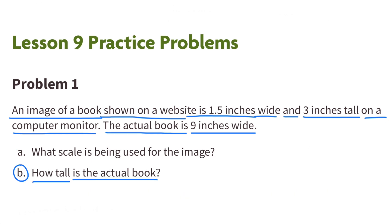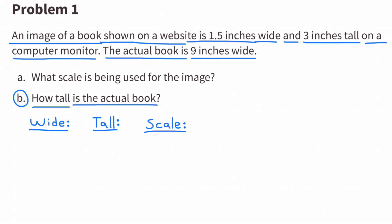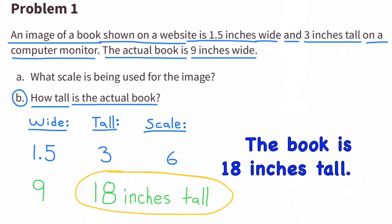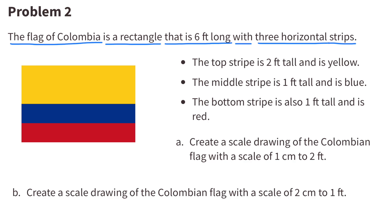Part B: how tall is the actual book? Using the information provided for the scaled copy on the computer monitor, the width is 1 and 5 tenths, the height is 3, and the scale is 1 to 6. Using the scale, 1 and 5 tenths times 6 equals 9, and 3 times 6 equals 18. The book is 18 inches tall.